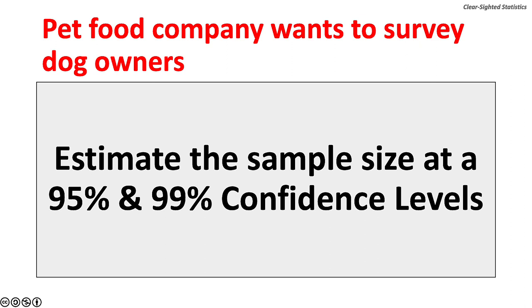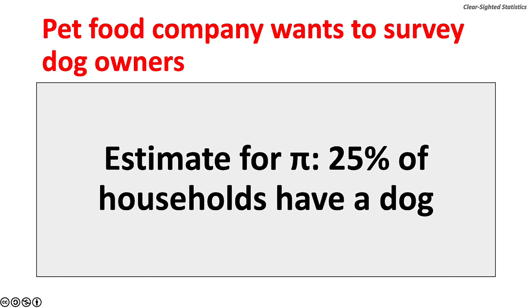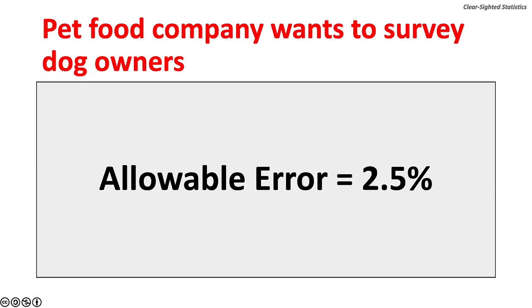A pet food company wants to survey dog owners. Estimate the sample size at a 95% and 99% confidence levels. The estimated population proportion is that 25% of households have a dog. The allowable error is 2.5%.